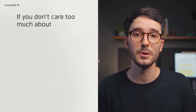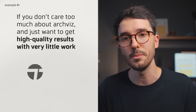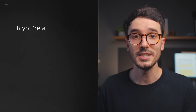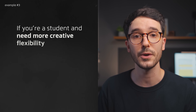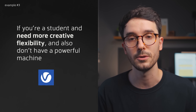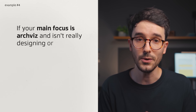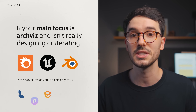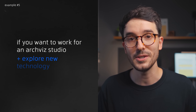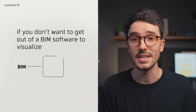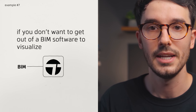Let me give you some examples of what I consider to be the best engine for each scenario. If you don't care too much about visualization and just want to get good results with very little work, go for Twinmotion, D5, Lumion, or Enscape. But if you're on a budget, D5 might be the best solution out of the four. If you're a student and need more creative flexibility to create different styles of renderings or diagrams and also don't have a powerful machine, V-Ray can be a great alternative — it has always been my favorite when I was in architecture school. If you only think about architecture visualization and aren't really designing or iterating, you may want to look at Corona, Unreal Engine, or Cycles. Out of those three, if you want to work for an ArchVis studio, 3ds Max with Corona might be the safest bet. But if you want to explore new technology and what might be the next step of ArchVis, Unreal and Blender is the way to go. And if you don't want to get out of a BIM software to visualize, then an engine that works directly with ArchiCAD or Revit is the answer.